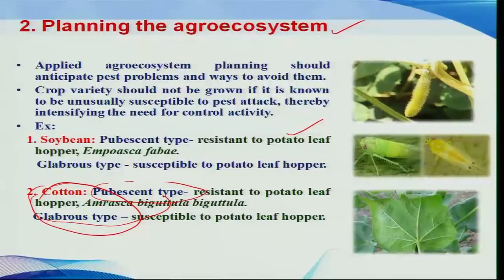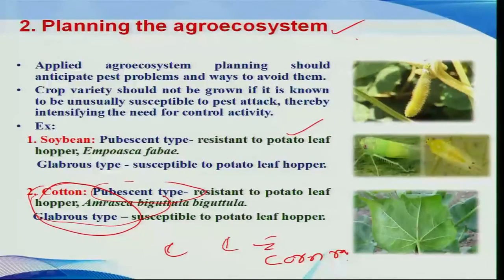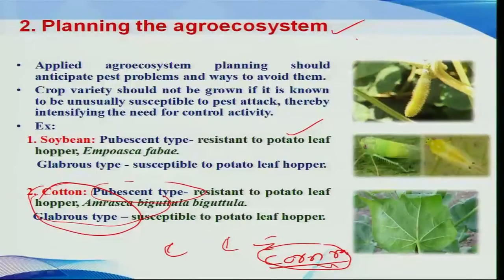Another example is crop rotation. Before planning, one should know what type of crop should be grown. The management of corn rootworm, one of the important pests in maize production, is a best example. If you grow corn continuously in a location, you are going to get a higher number of pests, and the incidence of corn stem borer will be high. Hence, we have to rotate corn with soybean, thereby reducing the pest population in the next season.